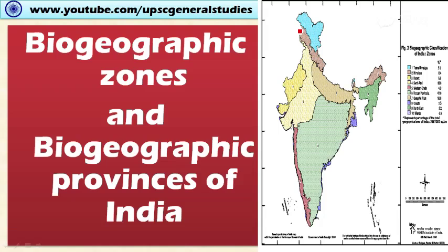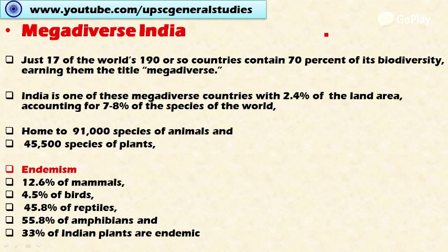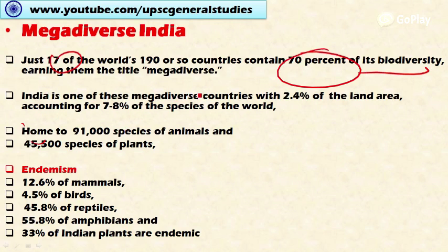Welcome friends. In this video let's discuss biogeographical zones and biogeographic provinces of India. India is divided into 10 important biogeographical zones, and these 10 zones are further divided into 25 biogeographical provinces. India is considered a mega-diverse country. There are 17 mega-diverse countries in the world out of 190 odd countries, and these 17 countries account for more than 70 percent of the biodiversity of the world.